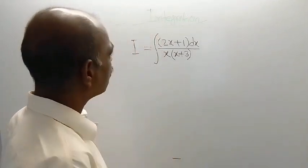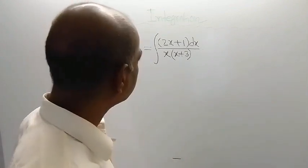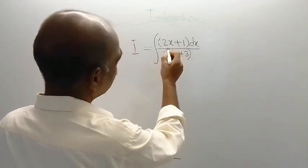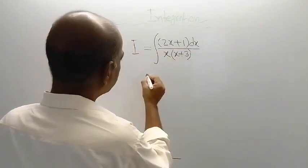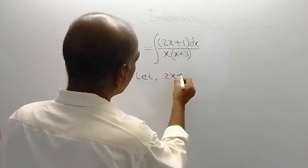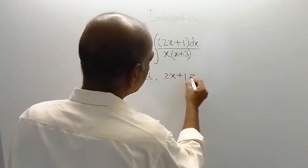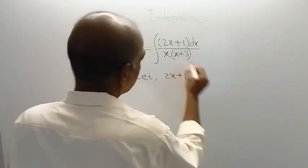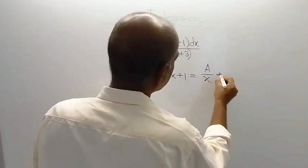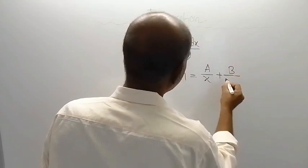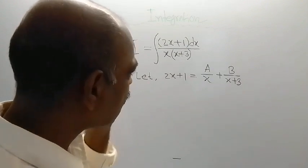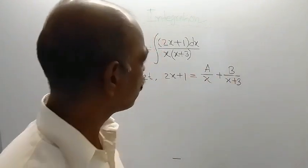The solution of this problem is very easy. Just what you have to do, you assume that this numerator, let 2x plus 1, the numerator is equal to capital A divided by x plus B divided by x plus 3. Here A and B both are constants.